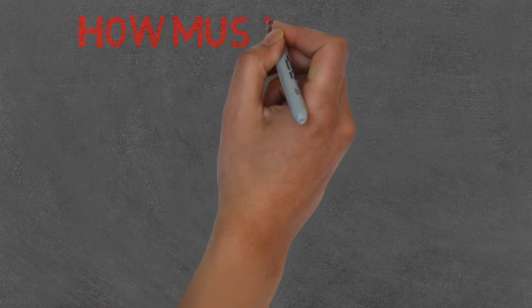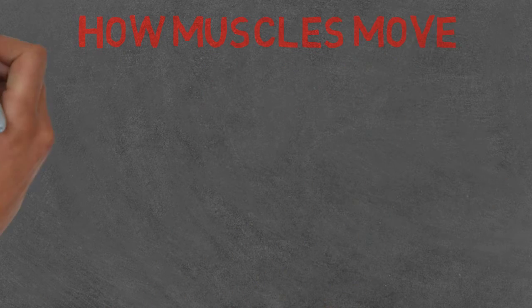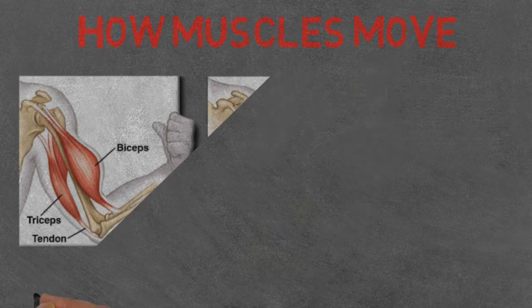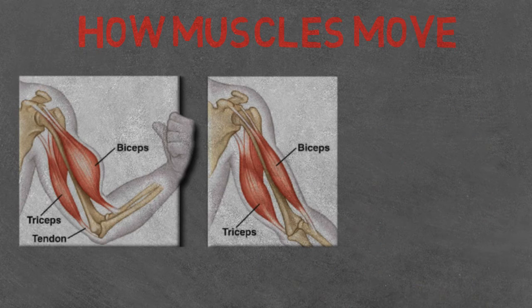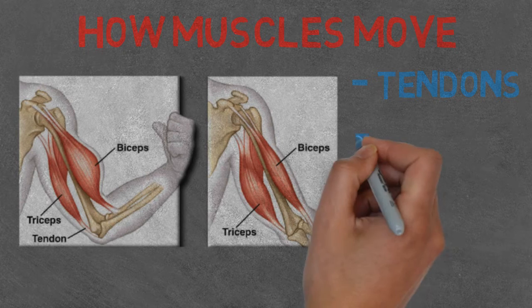But how do these muscles let you move? The muscles attach to two different bones via tendons. When a muscle contracts, it moves only one of the bones. For example, when your bicep contracts, only your forearm moves and not your shoulder, which is another place the bicep is attached.